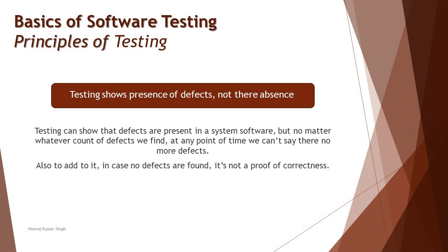Testing shows presence of defects — if you continue testing for another six months you may find more defects. Testing does not justify or prove that your product is defect-free. Testing is capable of finding defects, but stopping testing doesn't mean you've found all defects. You cannot set a threshold saying 'I've found 300 defects, I'm done' — if you continue testing, you'll keep finding more. You can never release a defect-free product; you just perform the best testing in the given timeline.